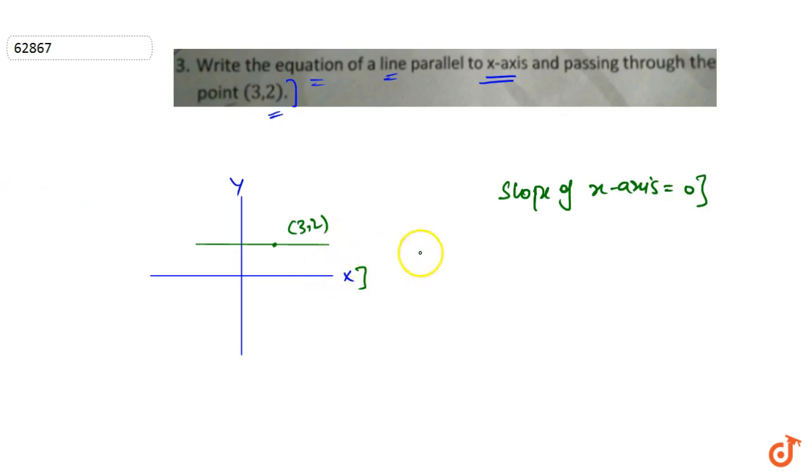So the line's slope is also 0, so m has to be 0. Now we have a point given where this line passed, it is (3,2).